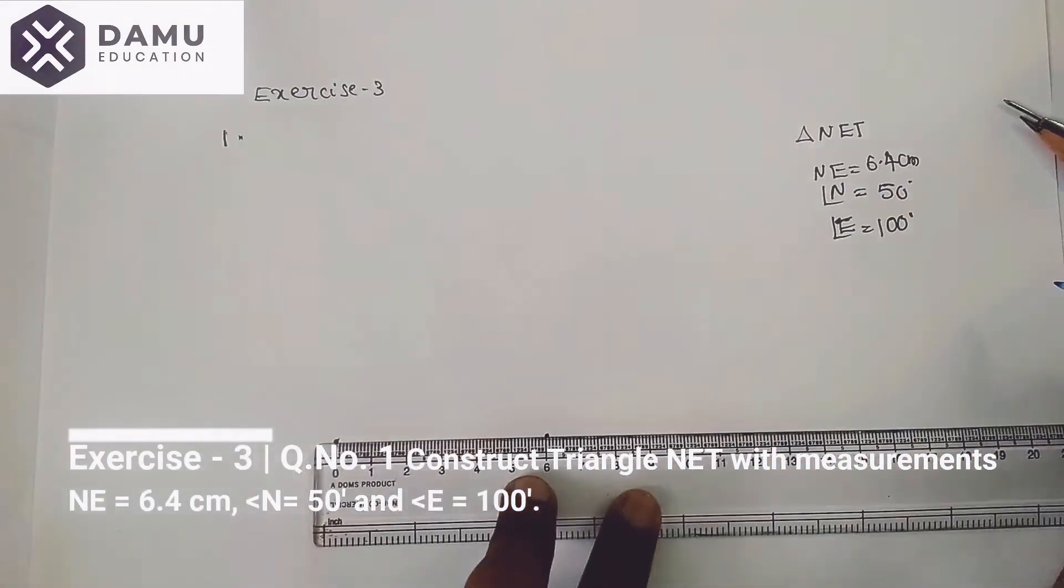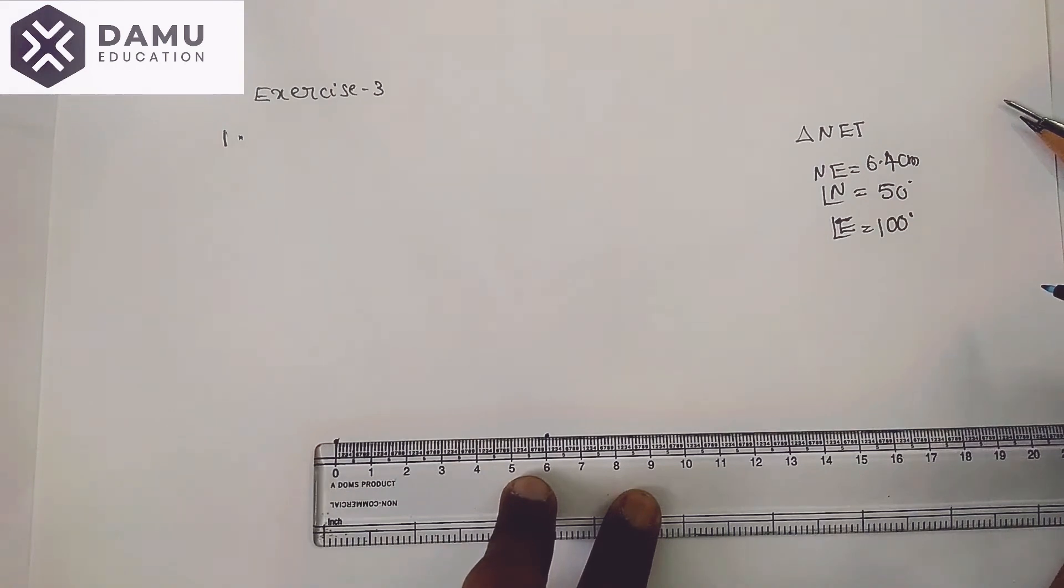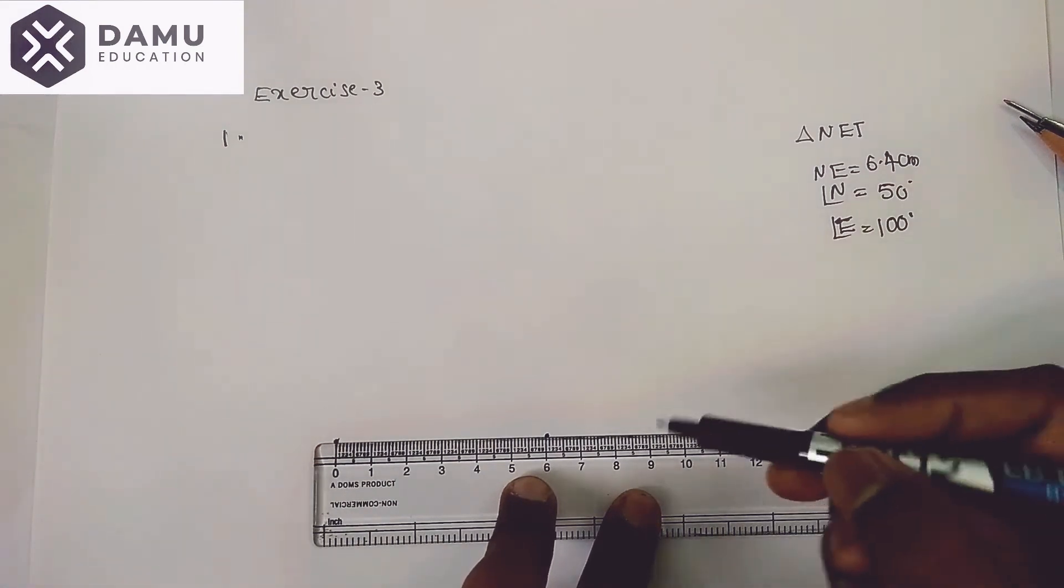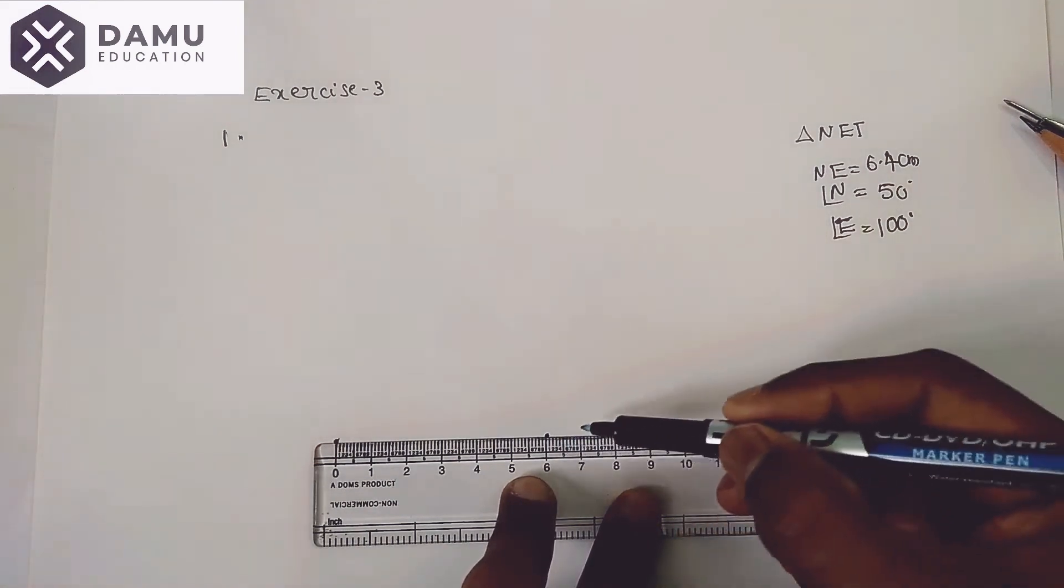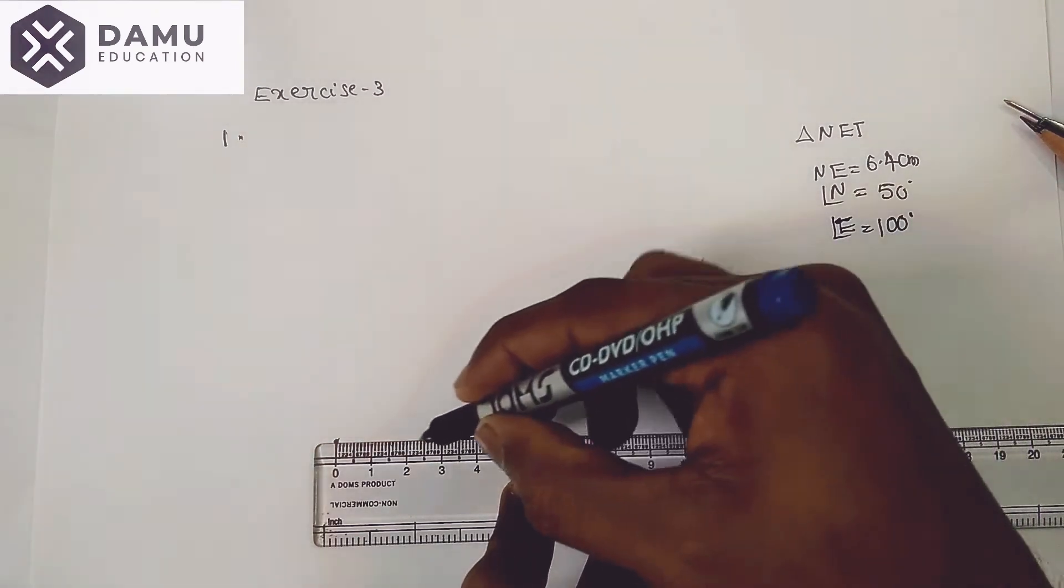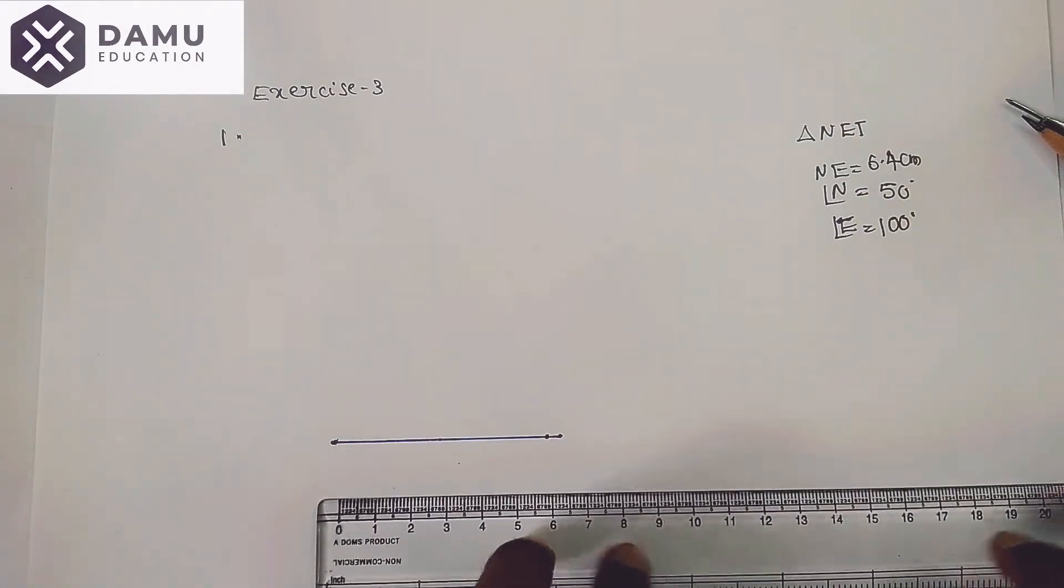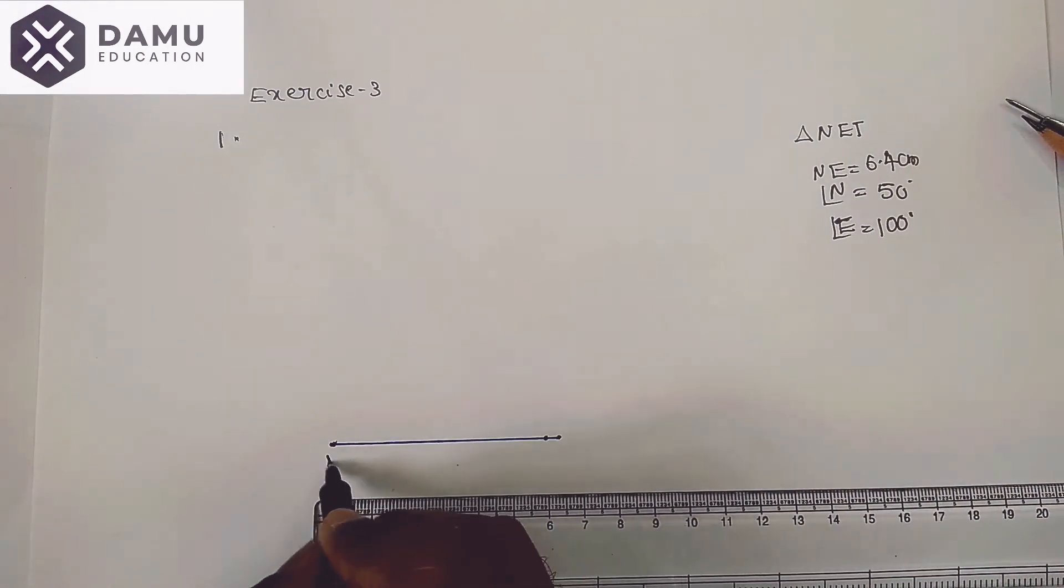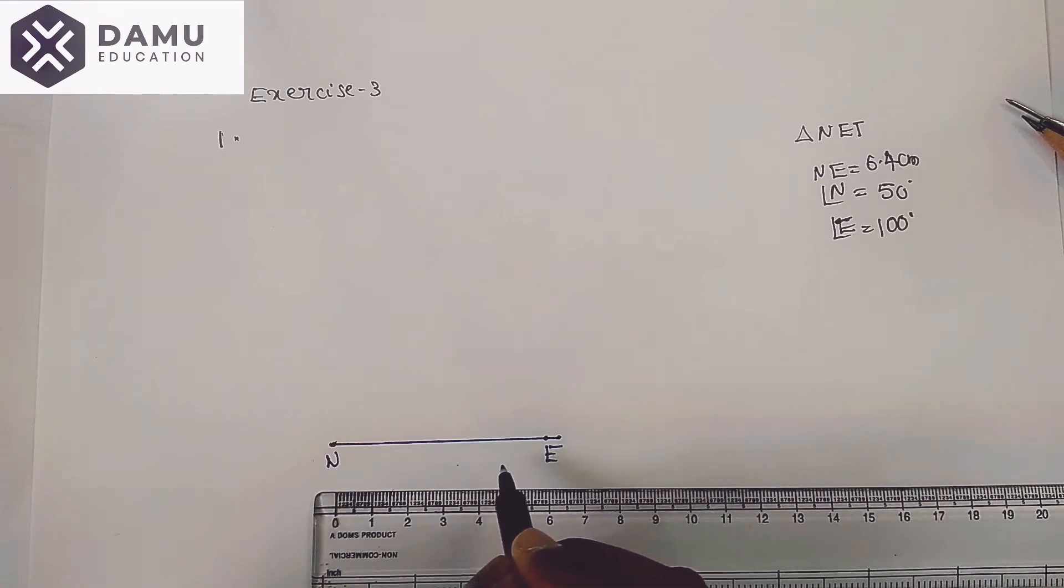From 0 to 6 centimeters, after that 4 millimeters. We have to take 4 millimeters: 1, 2, 3, 4, up to here. So we are drawing line segment NE equal to 6.4 centimeters.